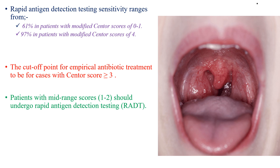Patients with a mid-range score of 1 to 2 should undergo rapid antigen detection testing before giving antibiotics. If the score is less than 3, there is a higher chance of viral pharyngitis. If the score is greater than or equal to 3, you should empirically administer antibiotics, considering group A streptococcal pharyngitis as the etiology.